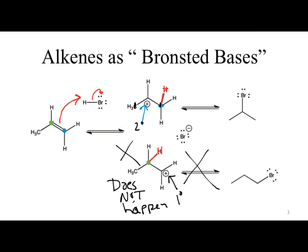So now looking at that top structure, we've got that carbocation — it's more stable than the primary, so at least it can form. To ultimately fix that, we need to make it neutral. We give electrons from the bromide ion to the carbocation, sharing electrons to form a bond. What we end up with is our product — this is our major product, which is what would appear on an exam. The other would be the minor product, and you need to be able to explain why.